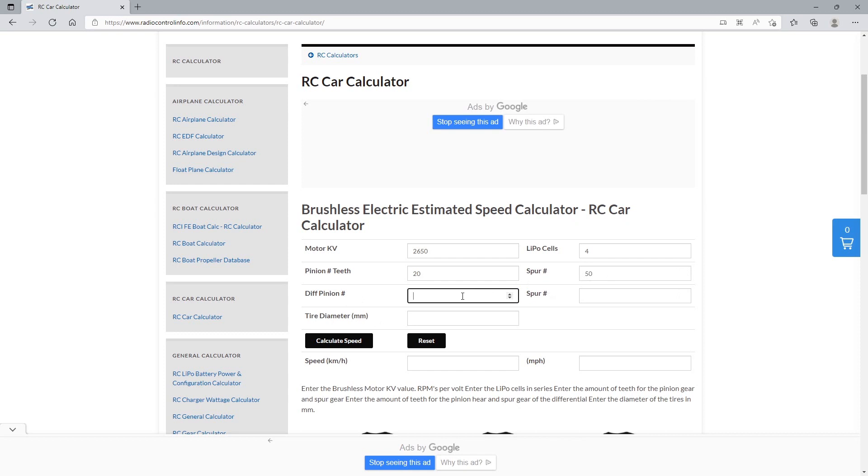As for the diff pinion number and the spur number, this is where we enter the pulley values into these locations. The smaller pulley value, this is going to be the 15 groove pulley. That gets entered into the diff pinion or the pinion gear side of things. And then as for the actual spur number, we're going to enter in the larger pulley which is going to be a 45 groove pulley. So we enter those values and then you put in your tire diameter and from there you can submit the calculator.